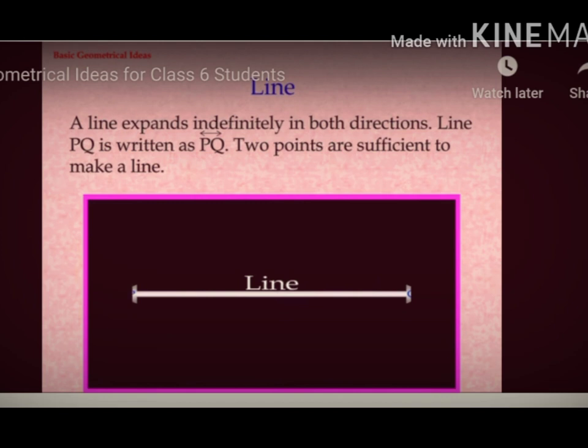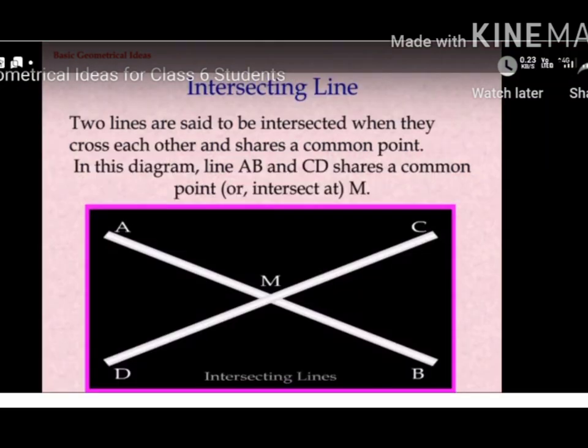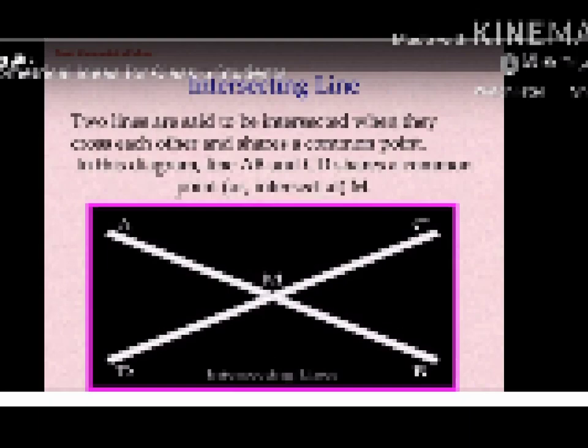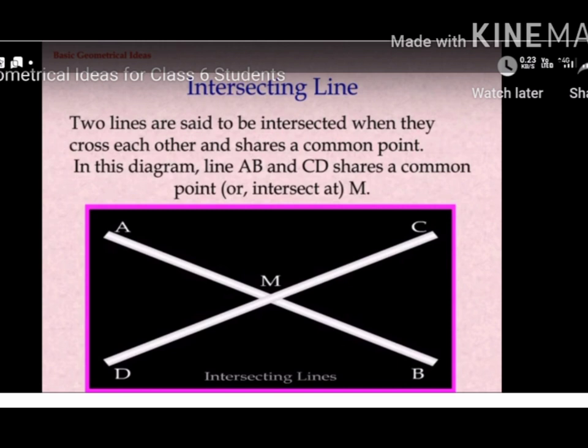See the next one. It is Intersecting Lines. Two lines are said to be intersected when they cross each other and share a common point. Here, the common point is M. In this diagram, line AB and CD share a common point and intersect at point M.